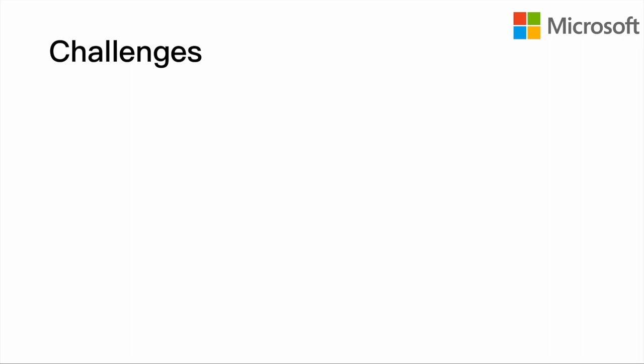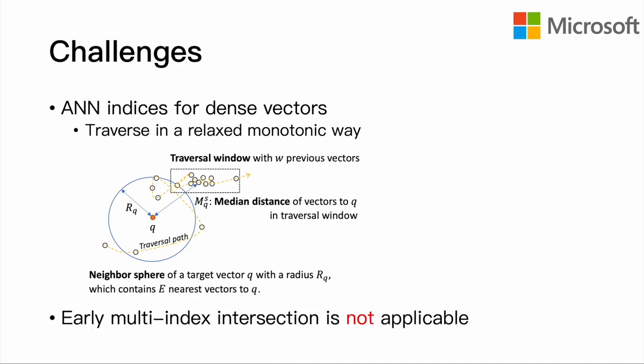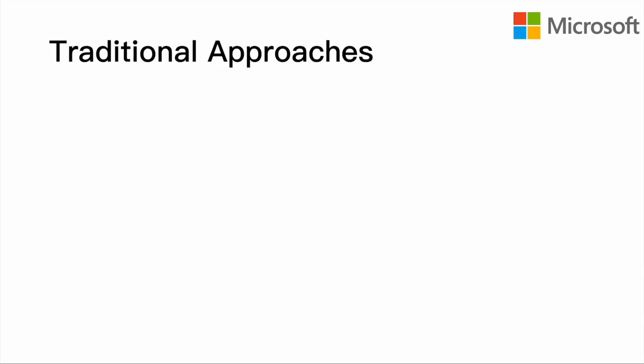Multi-index joint retrieval is challenging due to the special traversal manner of many vector indices, where it first approaches the target region and then steadily departs away approximately. Therefore, it remains uncertain whether a result returned from one index will be retrieved from another index. Thus, intersection among indices cannot be directly pushed down, so most solutions choose to search in an isolated way.